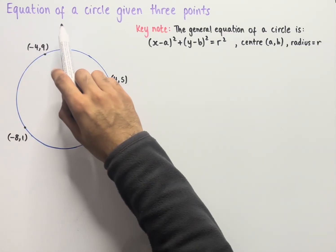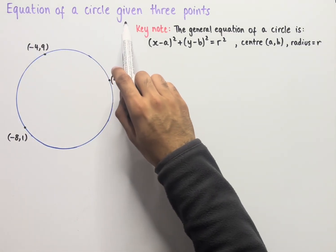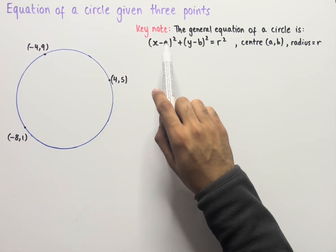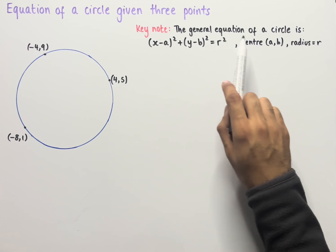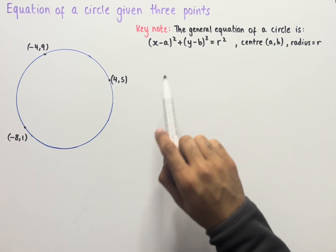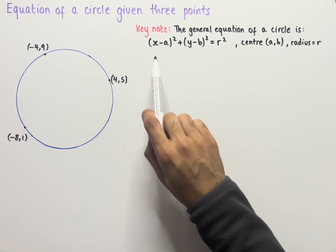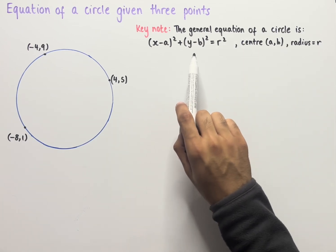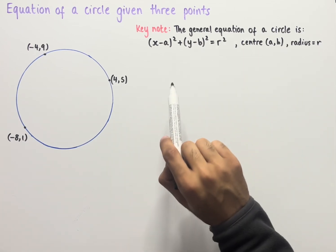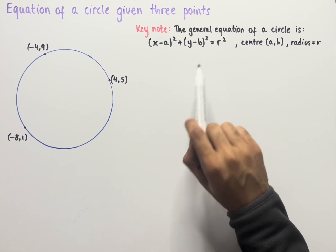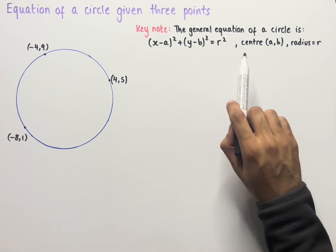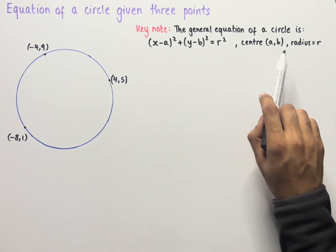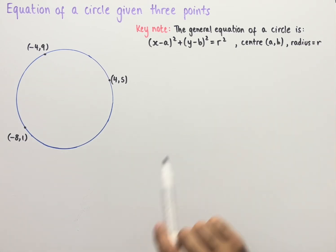Let's look at how to find the equation of a circle given three points. The general equation of a circle is given by (x - a)² + (y - b)² = r², where the center of the circle is (a, b) and the radius is equal to r.